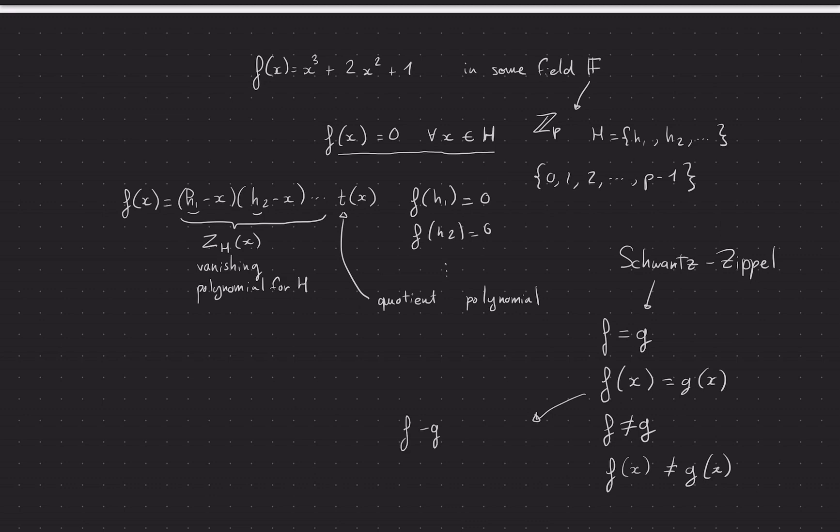That's pretty much solving the equation f(x) minus g(x) equals zero. So that's the number of roots that you have. Let's call that polynomial u(x) or I don't know. And basically that's the number of roots that you have - how many x's solve this equation, this big equation.